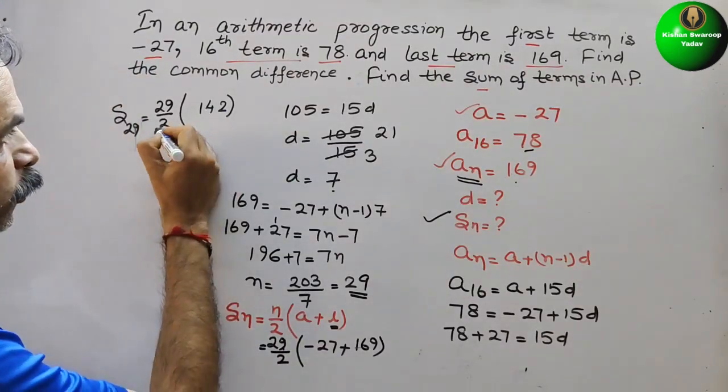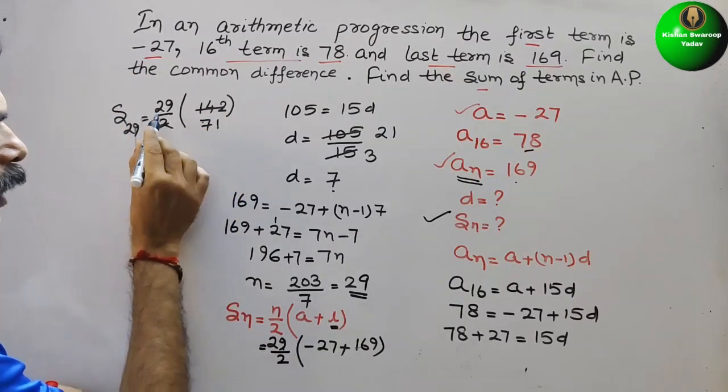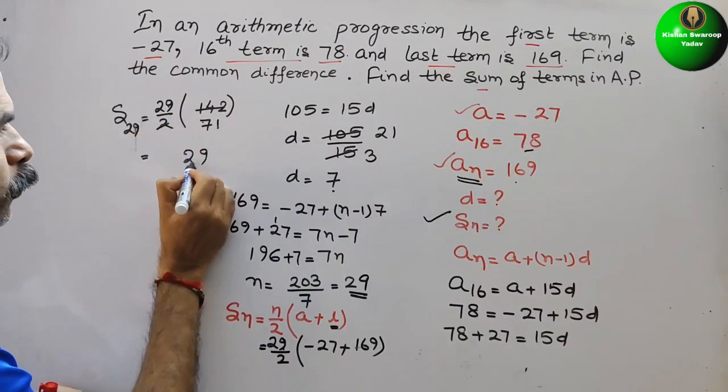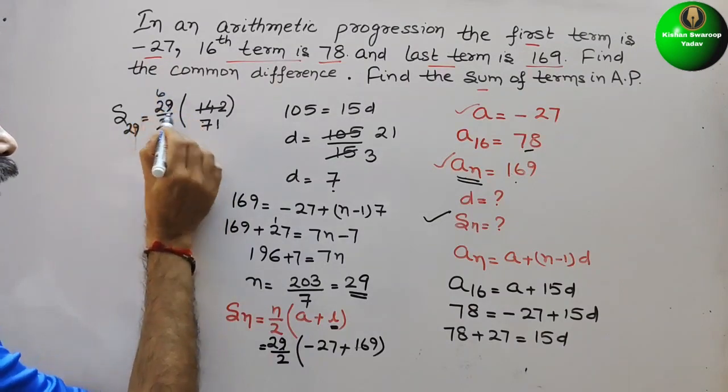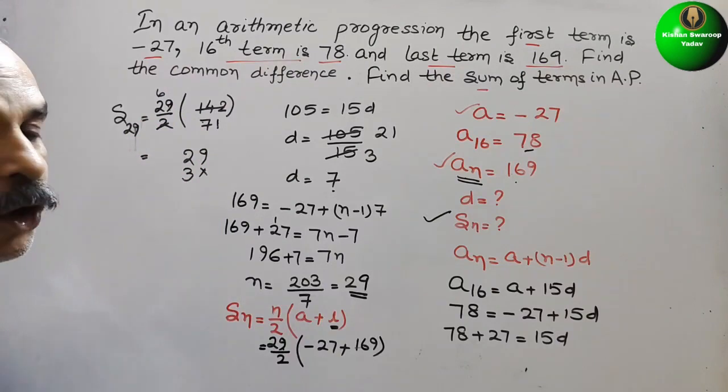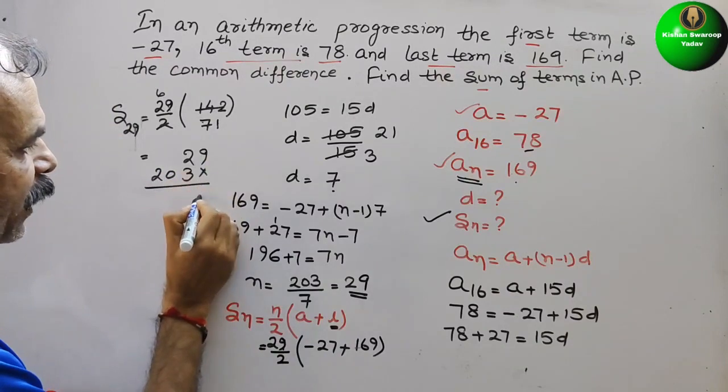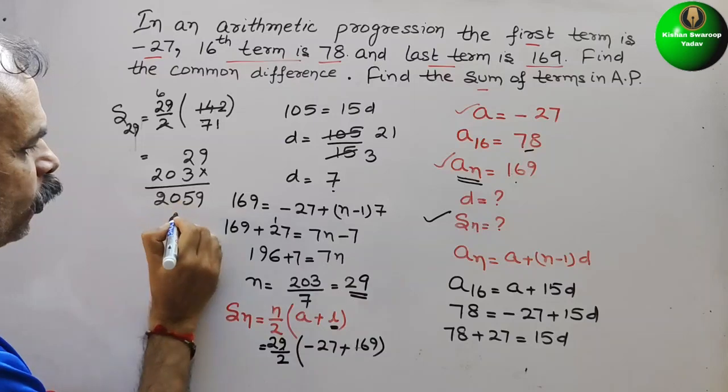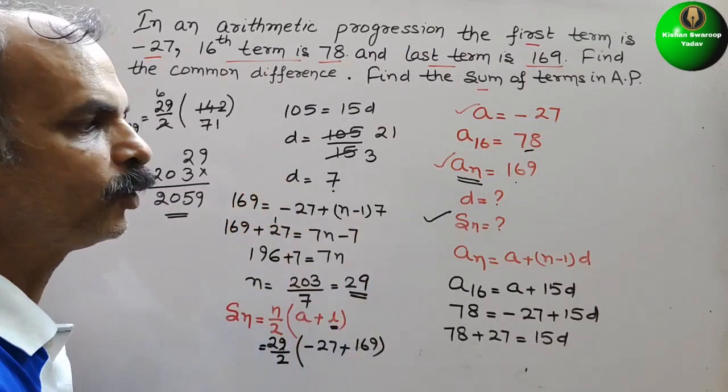Now reduce it by 2. So here comes your 71. So now just multiply that. 1 into 9 is 9, 1 into 2 is 2. Now 7 into 9 is 63, 6 carries, 7 into 2 is 14, 14 plus 6 is 20. So therefore we will get our answer. Here comes 2, 0, 5, 9. So your sum is 2059. So like this we have to do.